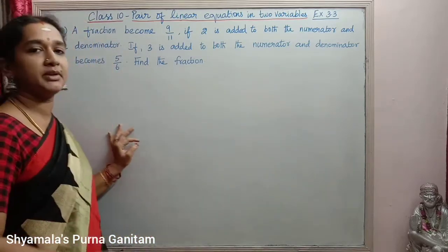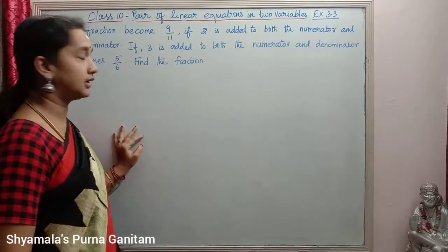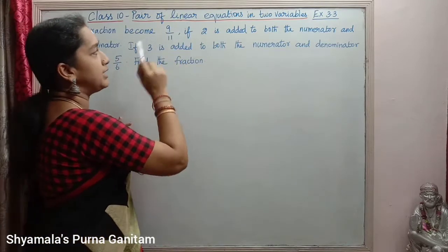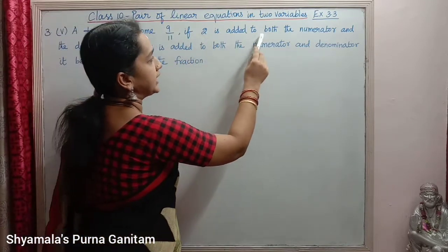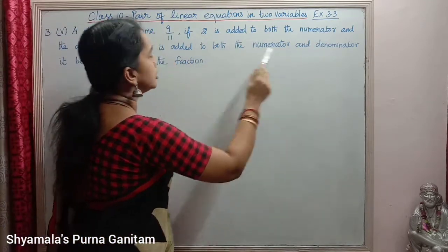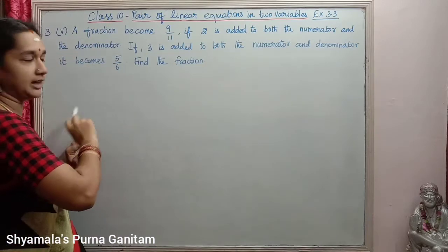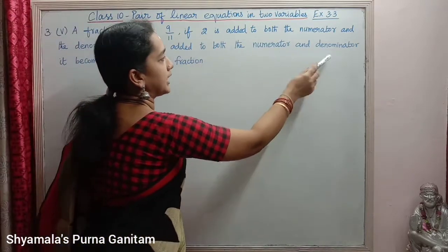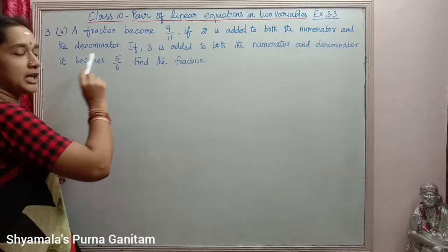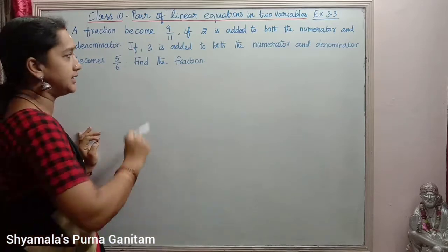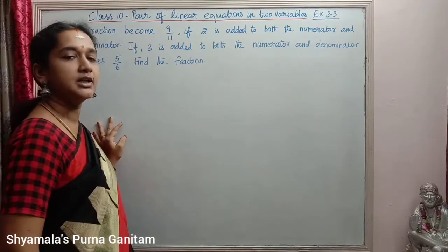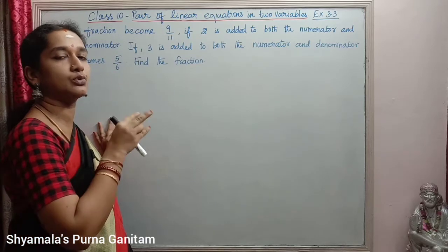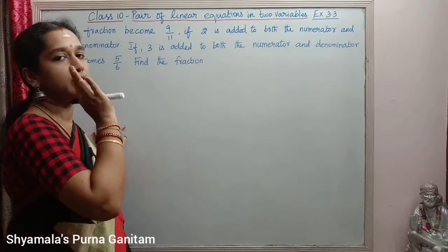In this third subdivision, the fifth sum is: a fraction becomes 9 by 11 if 2 is added to both the numerator and the denominator. If 3 is added to both the numerator and denominator, it becomes 5 by 6. Find the fraction. So two conditions are given for a fraction and we are asked to find the fraction.